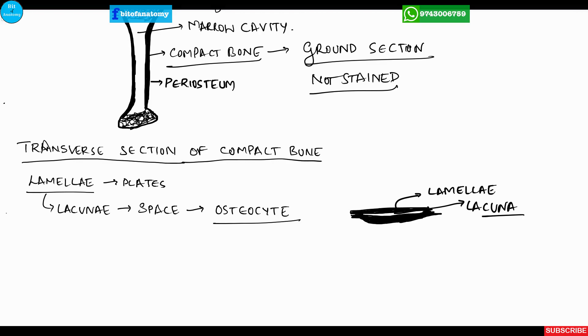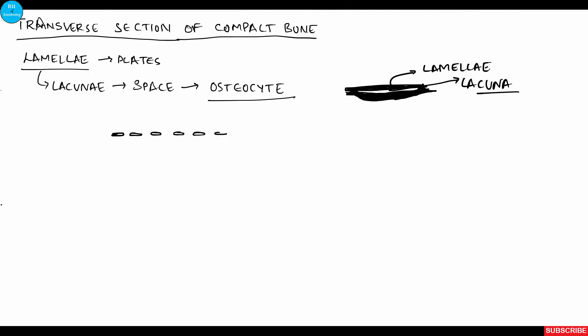The bone is surrounded by periosteum and endosteum on its outer and inner surfaces. Beneath the periosteum we can see the lacunae arranged parallel to each other. Even beneath the endosteum it is arranged parallel to each other and this arrangement is called circumferential lamellae.